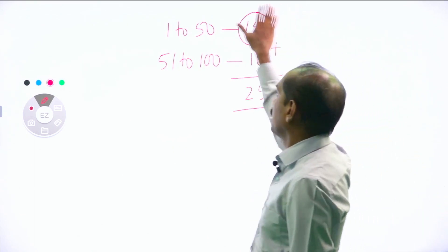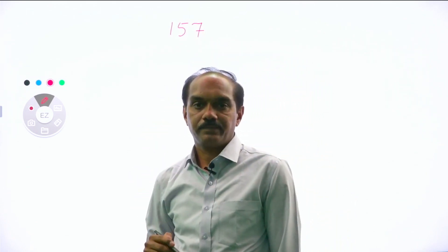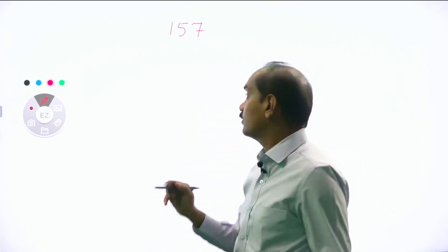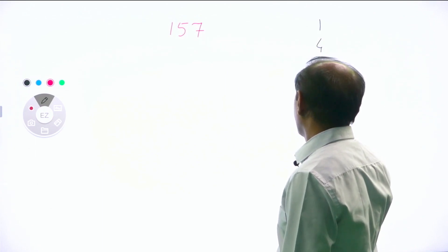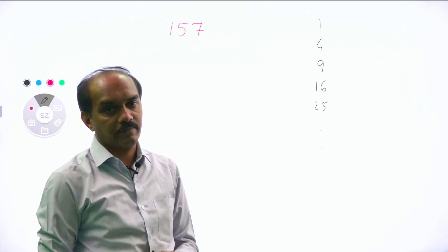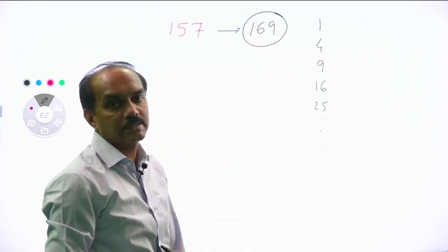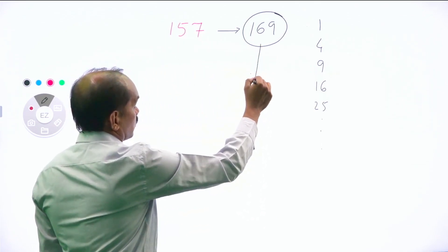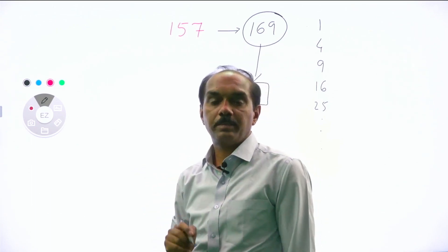How do you check whether a given number is prime or not? Say, for example, 157 — is it prime? First, enlist the perfect squares: 1, 4, 9, 16, 25... Check for the perfect square nearest to 157, which is 169. Its square root is 13. Now enlist all the prime numbers up to 13: 2, 3, 5, 7, 11, 13.